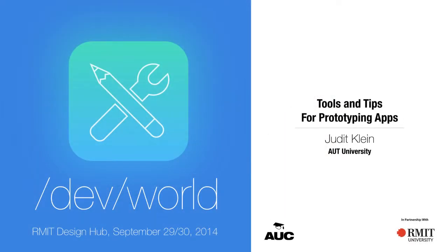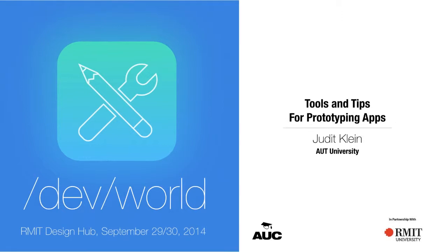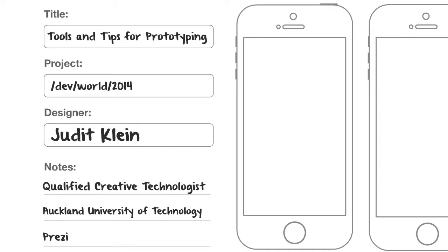Hello, my name is Judith Klein and I'm from Auckland University of Technology in New Zealand. I have recently finished a master's degree making me an officially qualified creative technologist, which is pretty much like being a wizard. This talk is about prototyping apps — how to make something that looks and behaves like an app without touching a line of code. And yes, I'm aware that we are at a developers conference, and I'll talk about why this can actually be an important part of the development process.